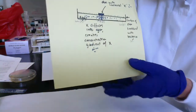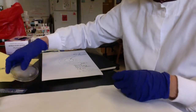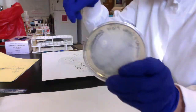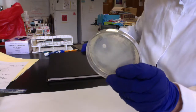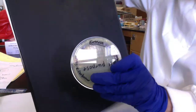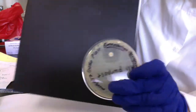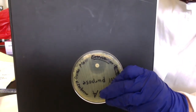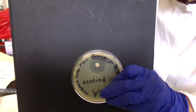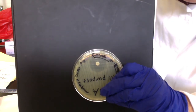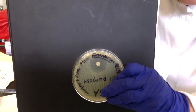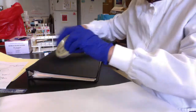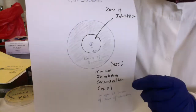We incubate the plates, and after incubation we pull the plates and look for a zone of inhibition. This is one of our demo plates from what we've done previously. This is a plate that we swabbed, and we put an antibiotic disc on the surface of the swab plate, and you can see there's a clear zone around the disc. So what is that clear zone? Let's pretend this is my plate.